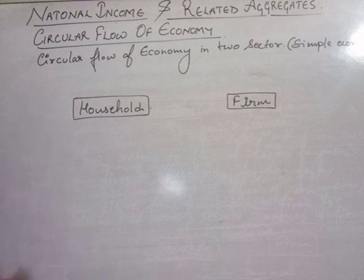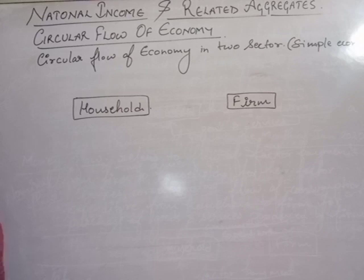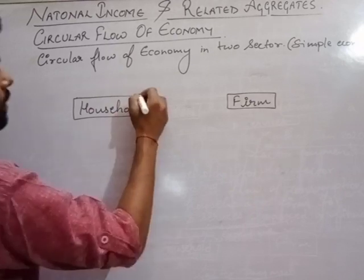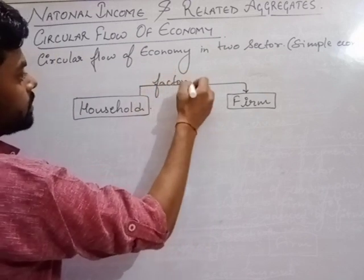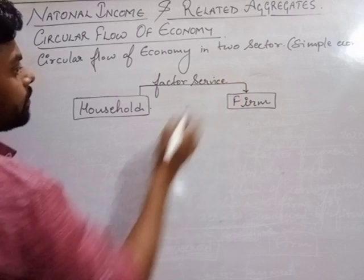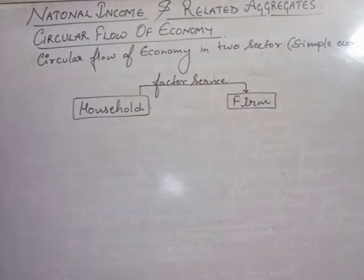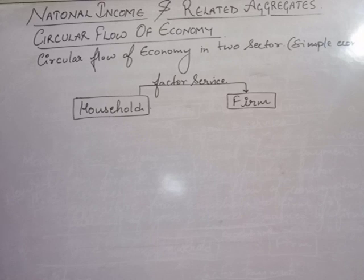As we discussed in the last video, there are two things: the real flow and the money flow. In real flow, there is no involvement of money. What happens in real flow is that the household supplies the factor services only to the firms, and the firms hire the factor services only from the household.